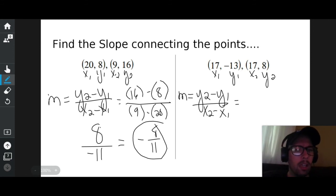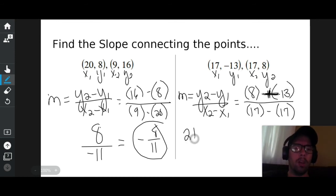Y sub 2 is 8. Minus is minus. Y sub 1 is negative 13. X sub 2 is 17. Minus and minus. X sub 1 is negative 13. Double negative. 8 plus 13 is 21. And 17 minus 17 is 0.